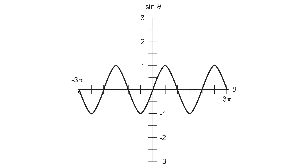So this might be, say, 1 millionth of a second representing one cycle, another millionth of a second, another millionth of a second — 10 to the minus 6 seconds. That would represent a frequency with an amplitude of plus or minus 1 and a frequency of 1 million cycles per second.